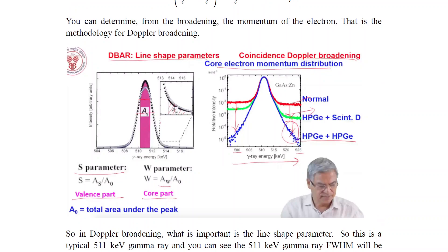The DBAR line shape parameters include the S parameter: S equals As divided by A₀, and the W parameter: W equals Aw divided by A₀. The S parameter reflects the low-momentum (valence) part and the W parameter reflects the high-momentum (core) part. E₀ equals the total area under the peak.